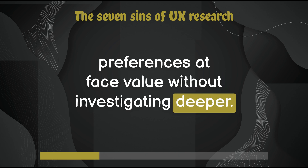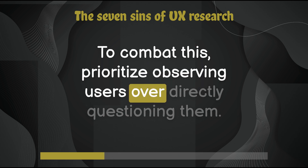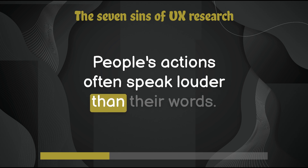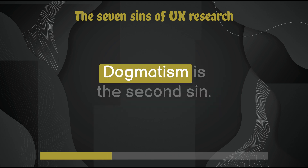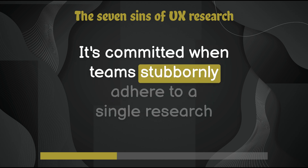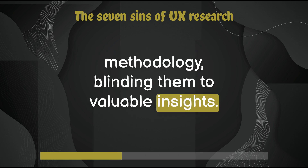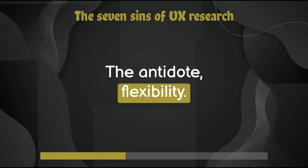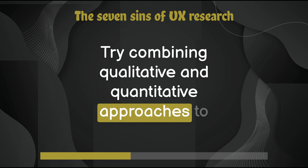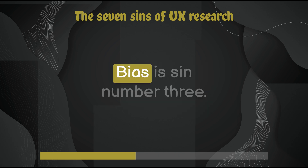Credulity, the first sin, occurs when researchers take users' stated preferences at face value without investigating deeper. To combat this, prioritize observing users over directly questioning them — people's actions often speak louder than their words. Dogmatism is the second sin: it's committed when teams stubbornly adhere to a single research methodology. The antidote is flexibility — try combining qualitative and quantitative approaches to gain a broader understanding of user needs.